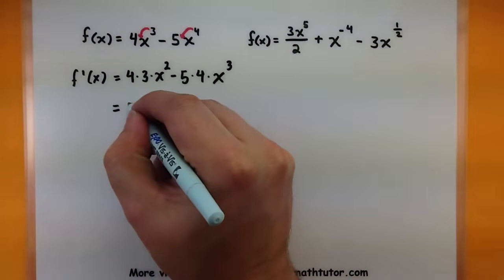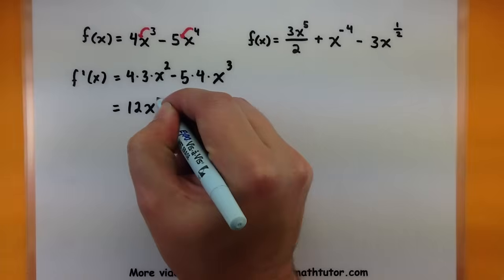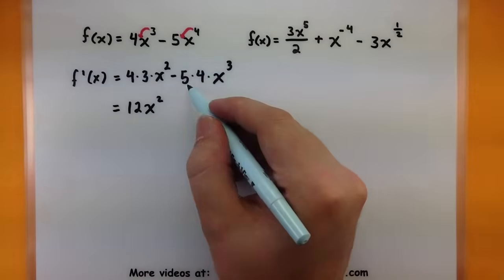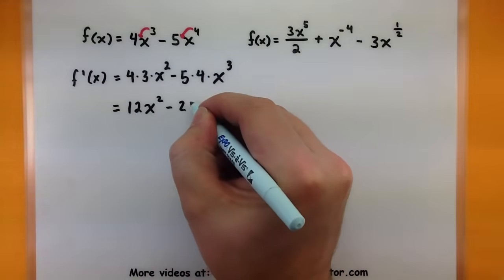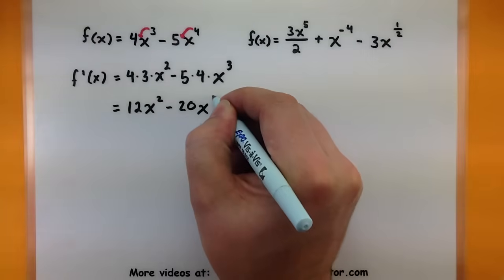So 4 times 3 would be 12x squared minus—5 times 4 is 20—x cubed.